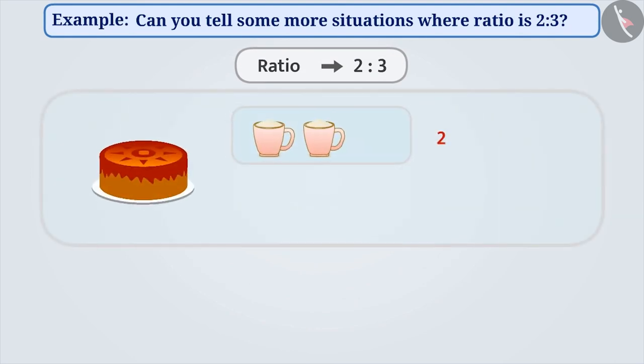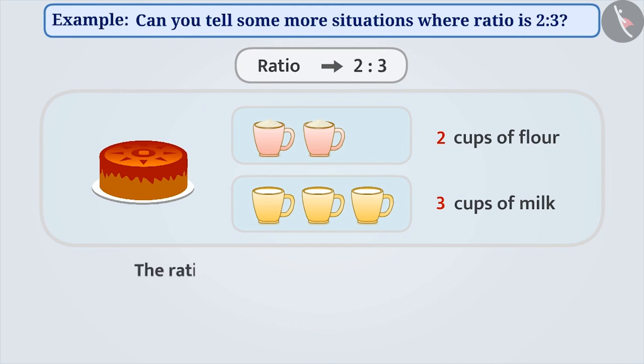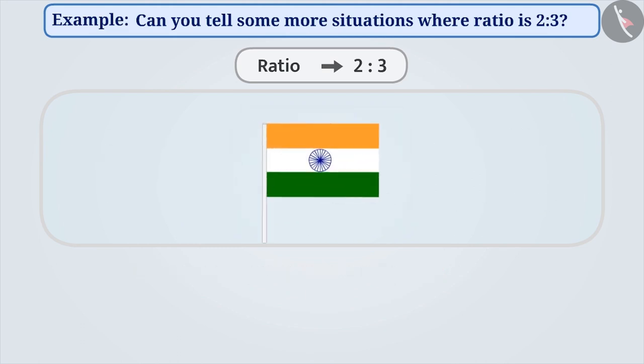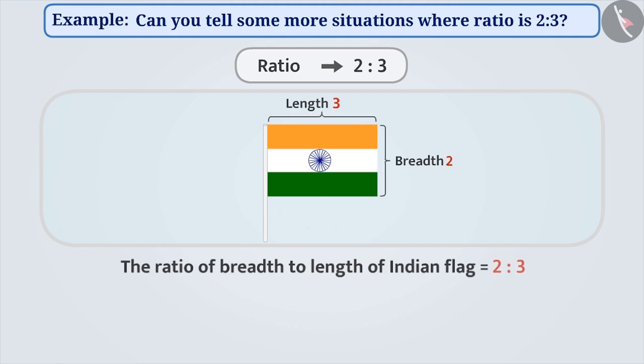If two cups of flour and three cups of milk is used to make a cake, then we can say that the ratio of flour to milk in the cake is 2 is to 3. Do you know that the ratio of breadth to length of the Indian flag is also 2 is to 3?